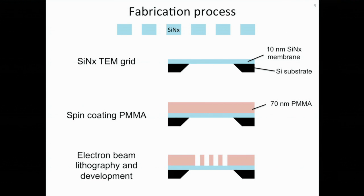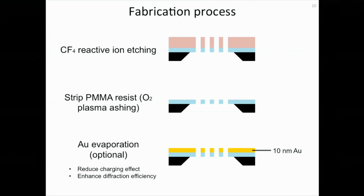We choose silicon nitride as a material to make our phase plates, because the technique to make a thin silicon nitride membrane is well known. We start with a commercially available silicon nitride TEM grid, a 10 nanometer suspended silicon nitride membrane supported by a silicon frame. We directly spin coat PMMA on top of the silicon nitride membrane, and do electron beam lithography and development. After that, we perform CF4 reactive ion etching to punch through holes into the silicon nitride membrane, and strip the PMMA resist with oxygen plasma etching. Finally, we evaporate a 10 nanometer gold film on top of the silicon nitride membrane to reduce the charging effect and also to enhance the diffraction efficiency.